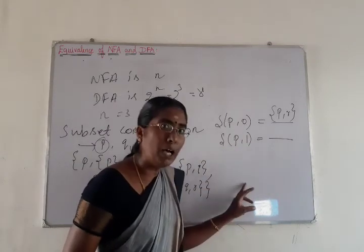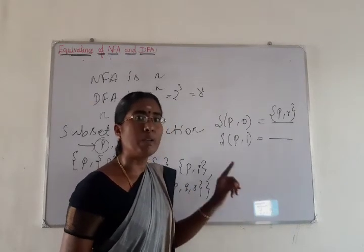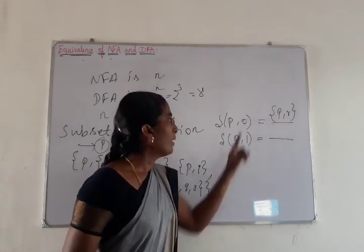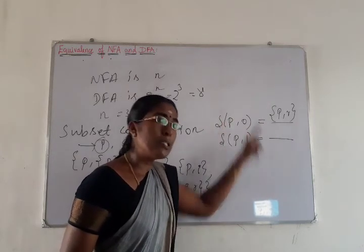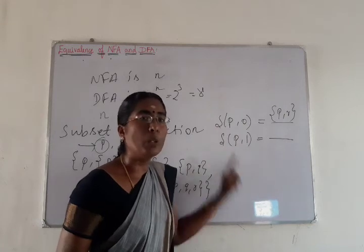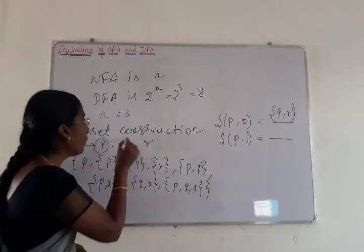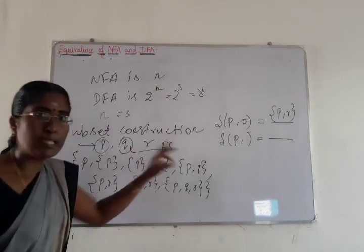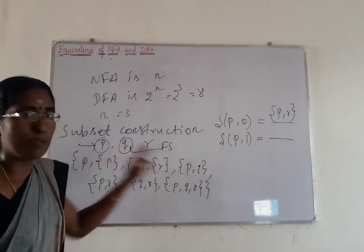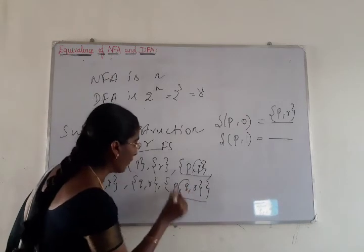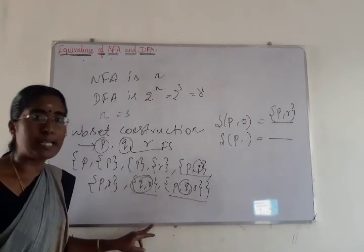Next, we have to extend the state P comma R for input symbol 0, and P comma R for input symbol 1. We continue extending all states obtained until all transitions lead to existing states. While constructing the DFA, if a state contains a final state — for example if Q is the final state of the NFA — then any DFA state which comprises Q, such as P comma Q, P Q R, or Q R, will also be considered a final state of the DFA.